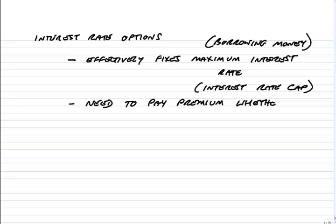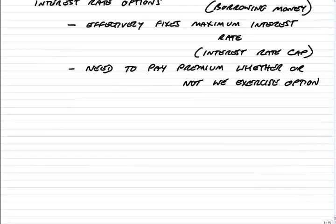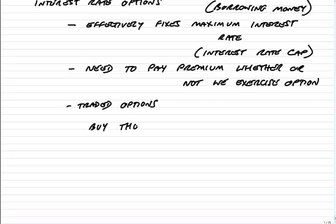We pay the premium whether or not we exercise the option. Where the problem does come is that when we talk about traded options — options that you can buy and sell on the exchanges — in fact, you can't buy an option directly on interest rates. The option that you can buy is the right to buy or sell futures at a fixed price on a future date.